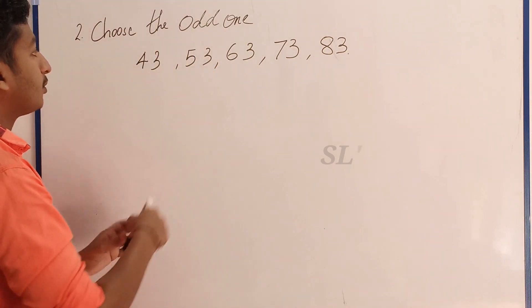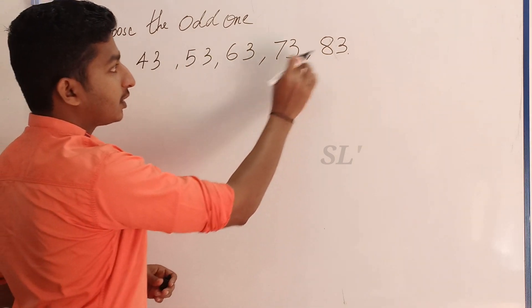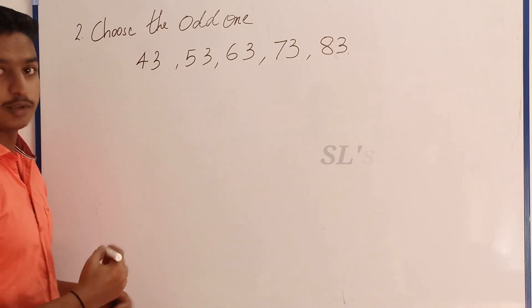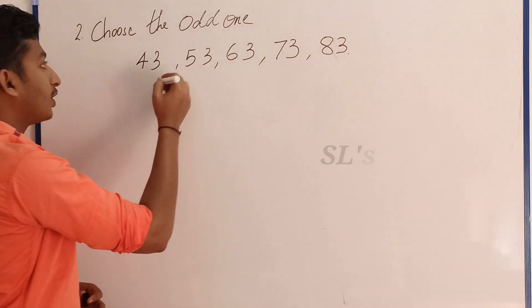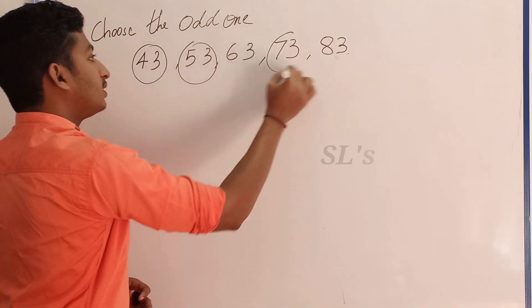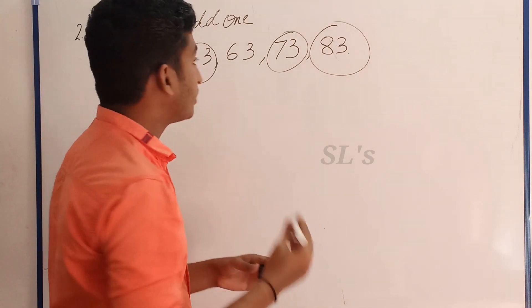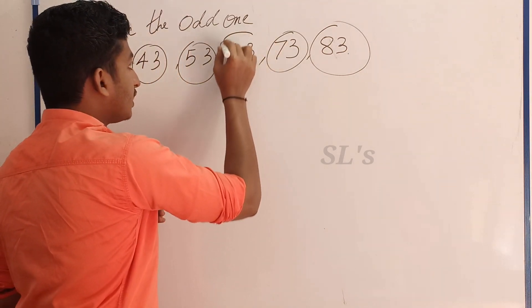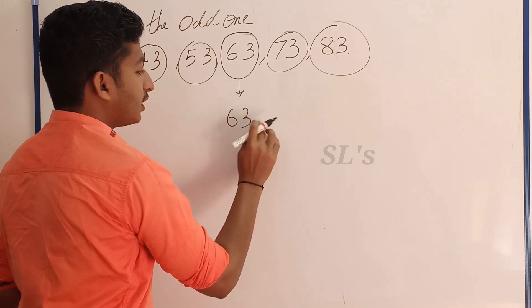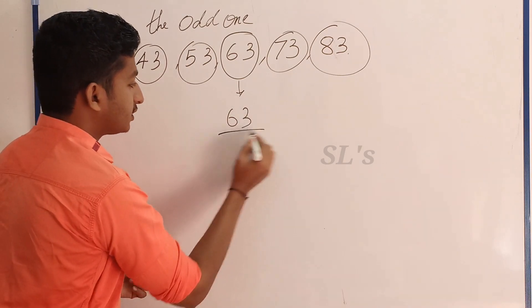The next question: choose the correct number — 43, 53, 63, 73, 83. These numbers are prime numbers. If you compare 63, note that 63 is divisible by 3 or 9, so 63 is not a prime number.